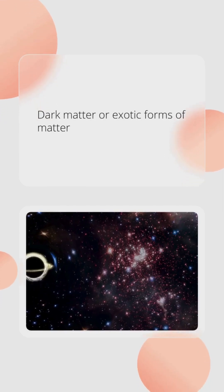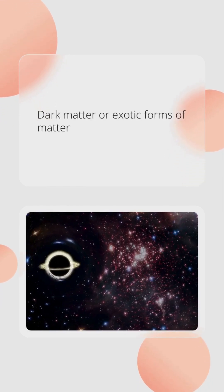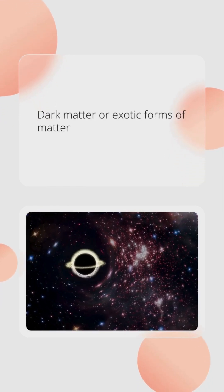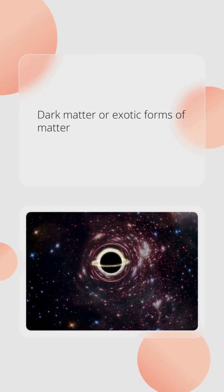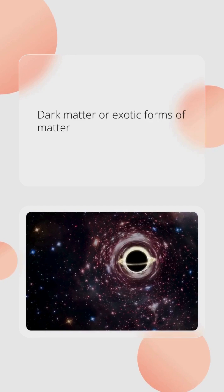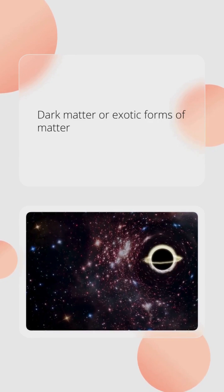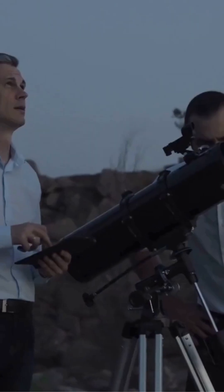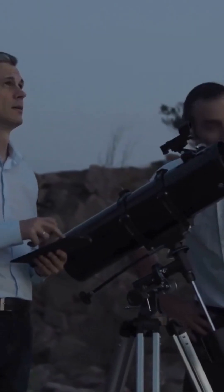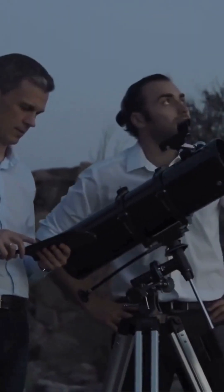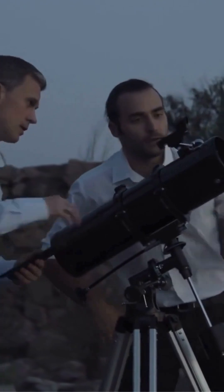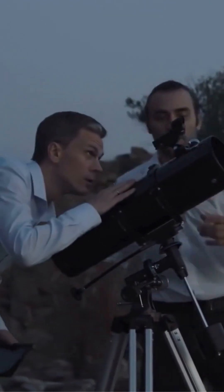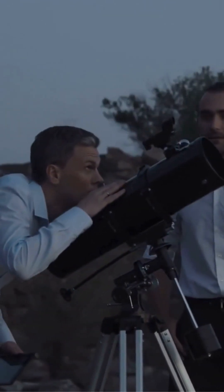Astronomers also consider the possibility of a star's light being dimmed by the presence of dark matter or other exotic forms of matter that can interact with light. While these factors are still purely theoretical, they represent an exciting area of research and discovery.